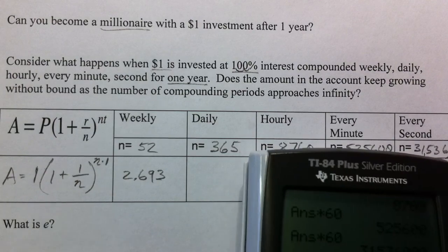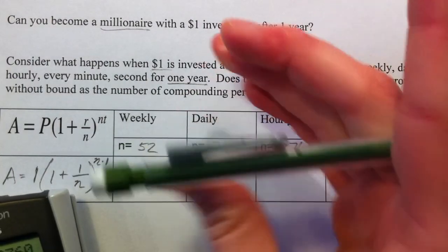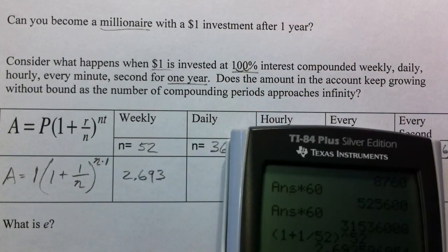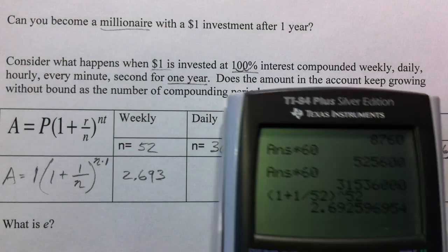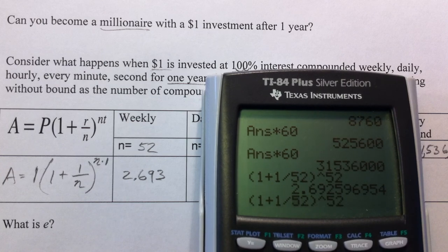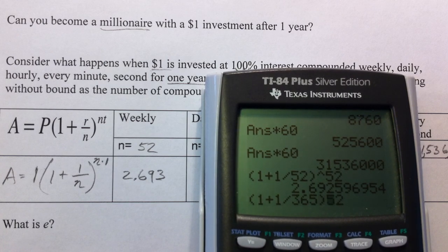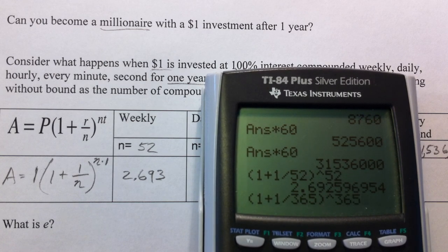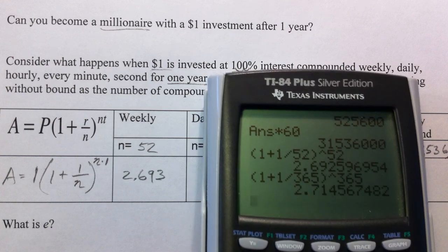So we have $2. And actually, yeah, we'll just keep the 2.693, even though it doesn't make as much sense. And then raise it to the 365. So we divide by 365, raise it to the 365 power. 2.715.